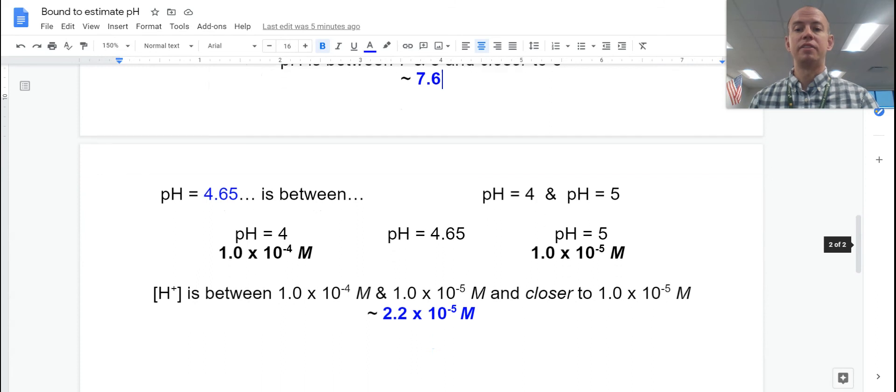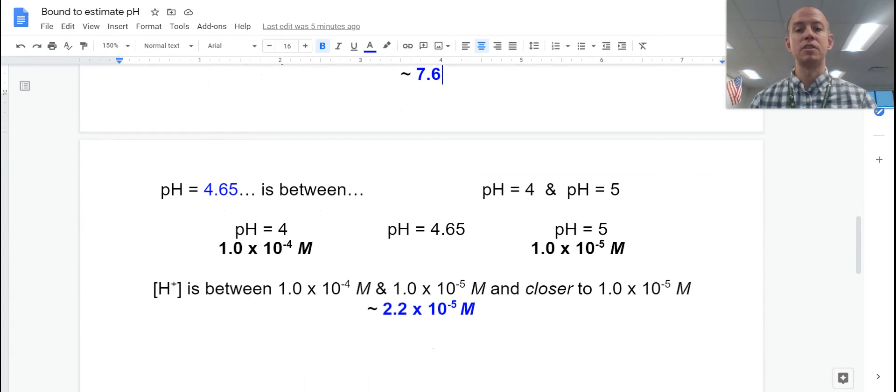We can also do this the other direction when we're given the pHs. We're thinking that okay well it's 4.65, that's between 4 and 5. If it was 4 it'd be 1 × 10^-4. If it was 5 it'd be 1 × 10^-5.